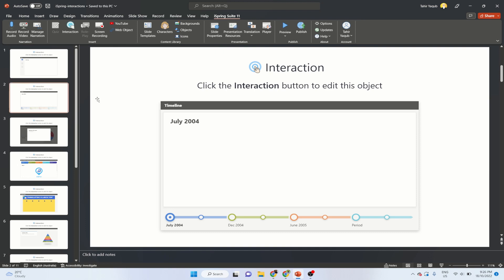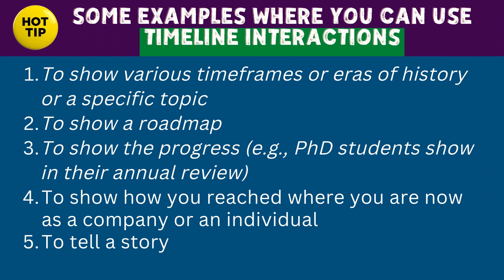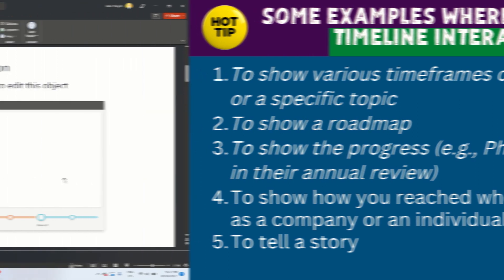The next type of interaction is a timeline interaction. These are the situations where you use it: for example, if you're a history teacher and want to show students different timeframes or eras of history, or if you want to teach project management and show a roadmap. Similarly, if you want to tell a story — which is a powerful tool for teaching — you can use a timeline as well.